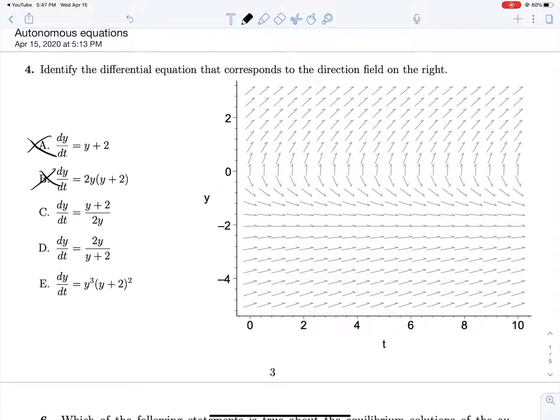And then skipping C for a second, going down to D, at y equals 0 this evaluates to 0, which is no good. We don't want a slope of 0, we want an undefined slope here. And at negative 2, this evaluates to some real number. Oh yeah, it's undefined actually at negative 2. So this is exactly the opposite behavior that we're looking for.